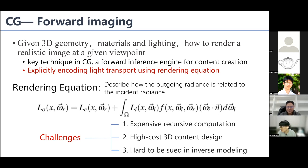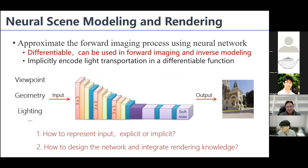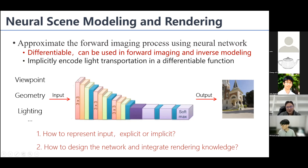Finally, forward rendering has to be used in reverse modeling, meaning we cannot directly use captured images. Recently, the development of neural rendering techniques tried to approximate the forward imaging process using networks. In computer vision, all techniques that can generate images are classified as neural rendering. But in this talk, we are discussing how to use neural rendering techniques to approximate the forward imaging process.